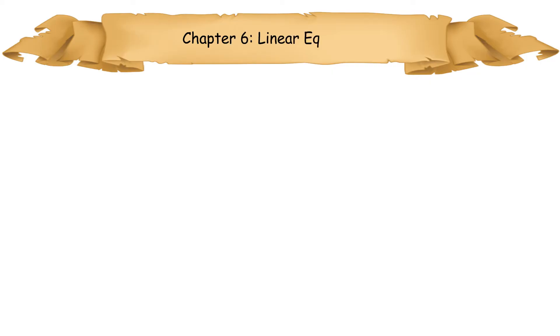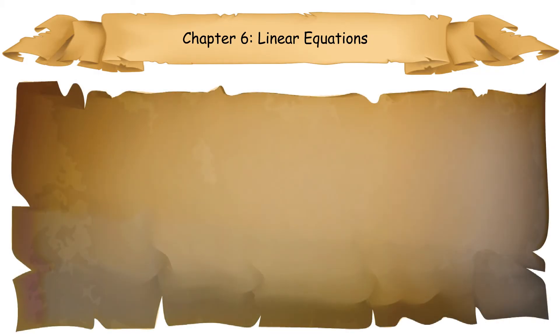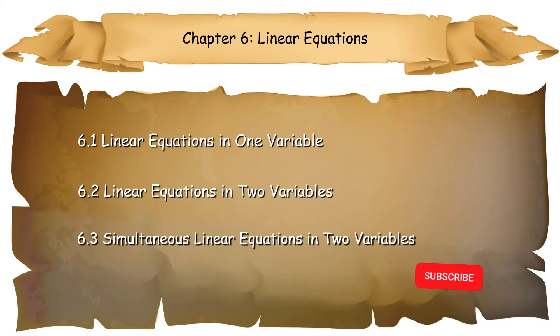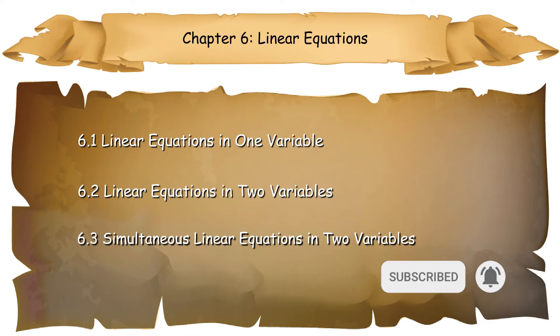Hi, I am Teacher Daisy. Now let's learn Form 1 Mathematics Chapter 6 Linear Equations. In this chapter, you will learn 6.1 linear equations in one variable, 6.2 linear equations in two variables, and 6.3 simultaneous linear equations in two variables.